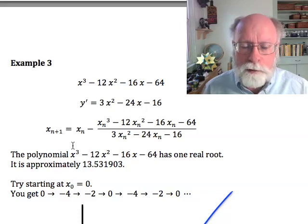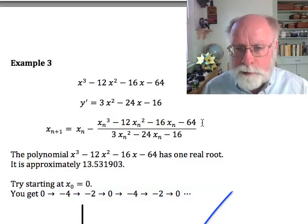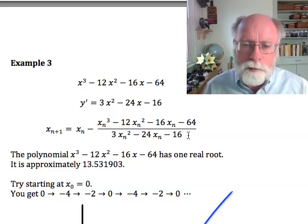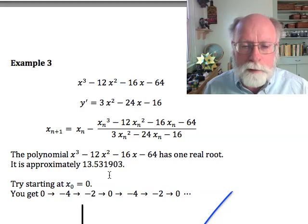So the iteration formula is that x sub n plus 1 is x sub n minus, and this is the function evaluated at x sub n, divided by the derivative evaluated at x sub n.